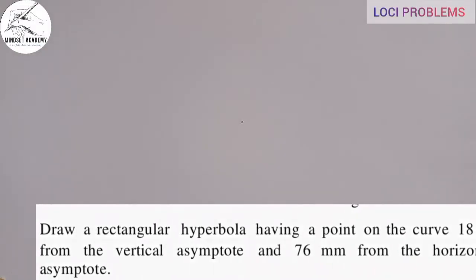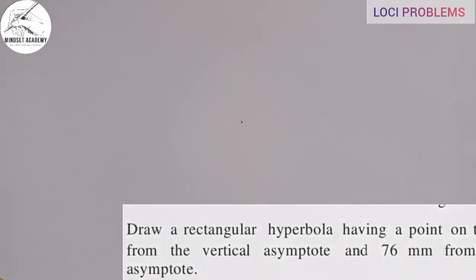When we talk about asymptotes, asymptotes simply means the lines that are tangent to the hyperbola at infinity. They are called asymptotes.